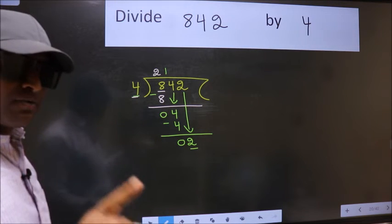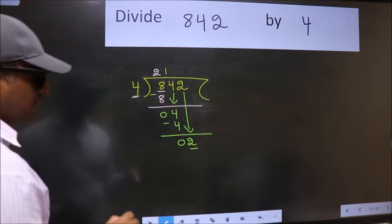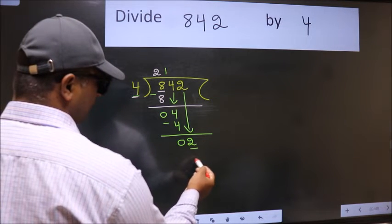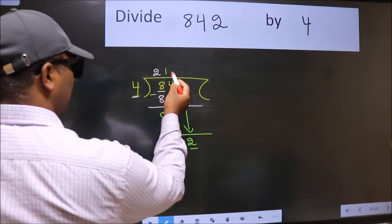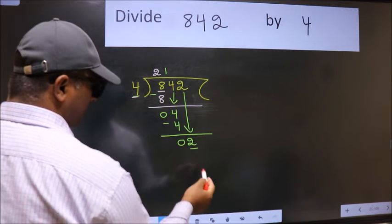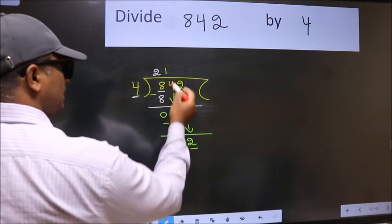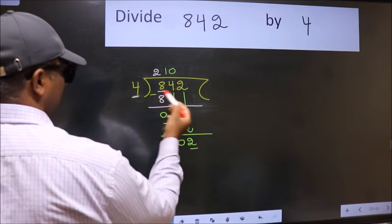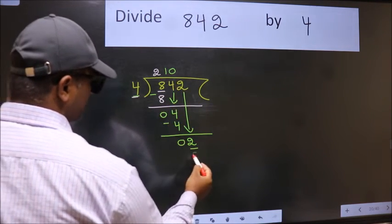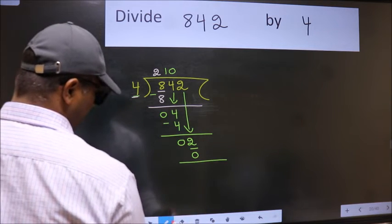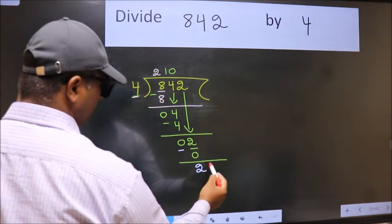Instead of that, what we should think of doing is, which number should we take here? If I take 1, we will get 4. But 4 is larger than 2. So, what we do is, we take 0 here. So, 4 into 0, 0. Now we subtract, we get 2.